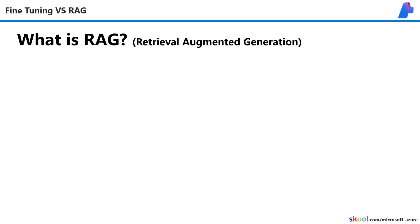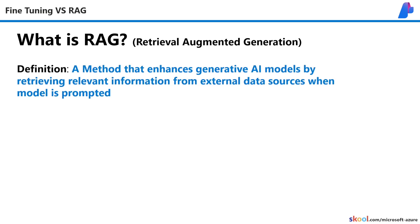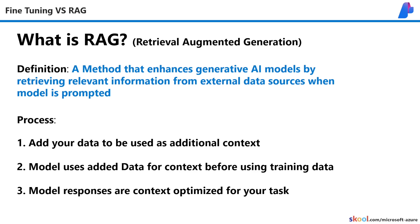So what is RAG? RAG stands for Retrieval Augmented Generation. It is a method that enhances generative AI models by retrieving relevant information from external data sources when a model is prompted. To use RAG, you add data that can be used to add additional context, and when a user prompts the model, that data can be viewed to modify the context of the prompt and inform the model of the most relevant information based on the user's intention. This context allows you to optimize your model responses to perform the way you want.